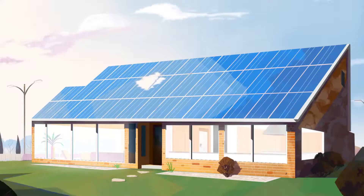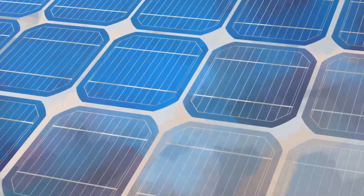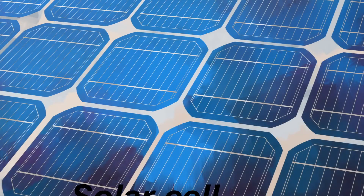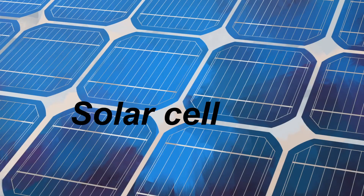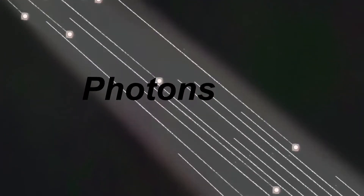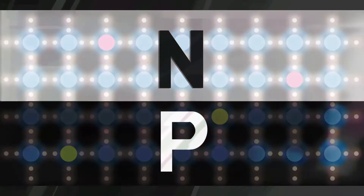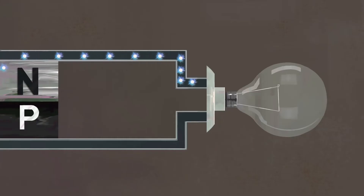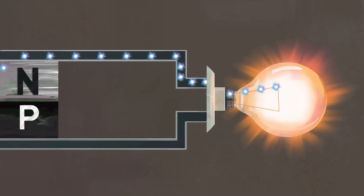Solar panels are made up of smaller units called solar cells. The light of the Sun comes as a flow of tiny particles called photons. When these photons strike the solar cell, they activate the electrons and create an electric current.